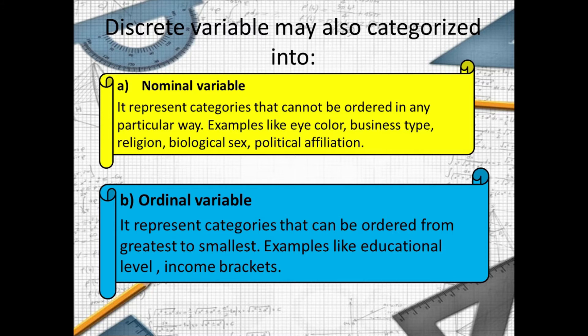Examples like educational level and income brackets. Why we include educational level? It is because we can create order in education.